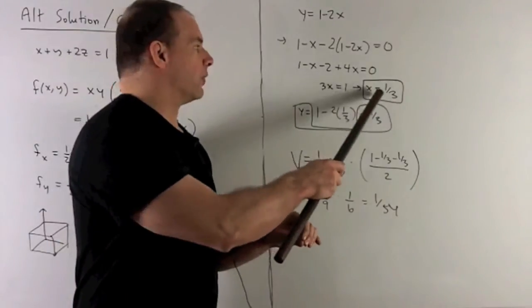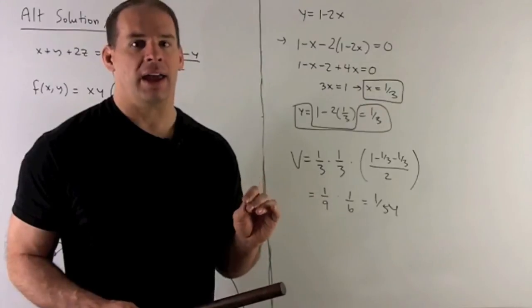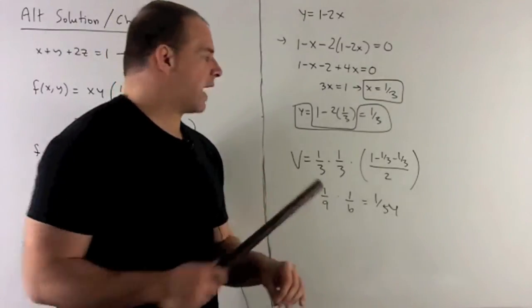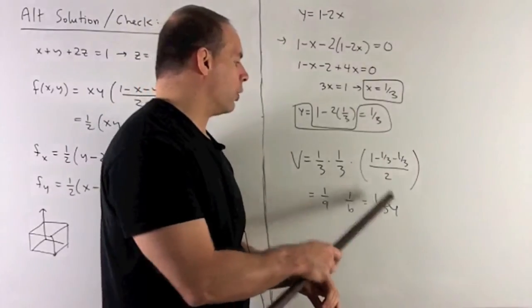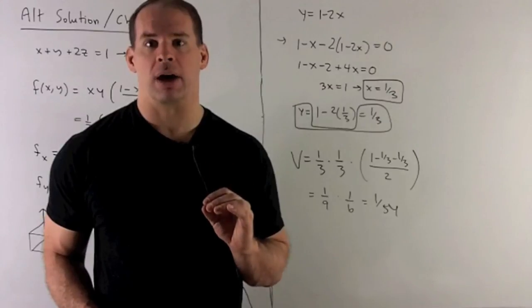When you sub the 1 third back into here, we get y equal to 1 third. So I have x and y, and I can also put these into the function, and I'll see that the volume is going to come out as 1 over 54, which agrees with the method from Lagrange multipliers.